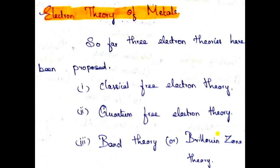The next topic is the electron theory of metals. What does electron theory explain? It explains the electrical property, thermal property, structural property, elasticity of the material, binding property of solids, and whether the material is a conductor, semiconductor, or insulator. So far, three electron theories have been proposed: the classical free electron theory, the quantum free electron theory, and the band theory, also known as Brillouin zone theory. In this chapter, we will cover all three theories and the properties, successes, and failures of each.